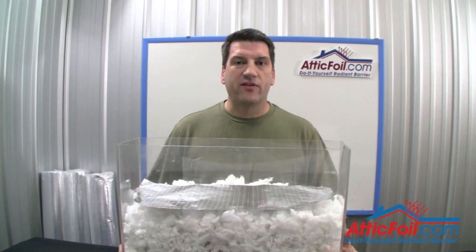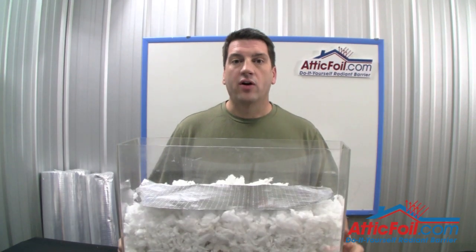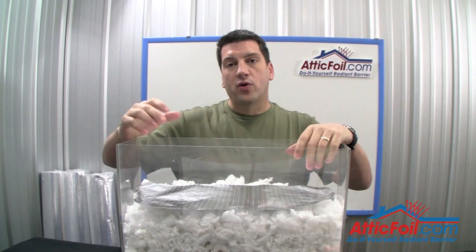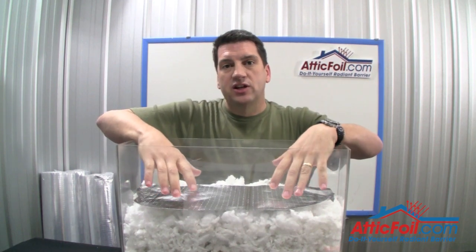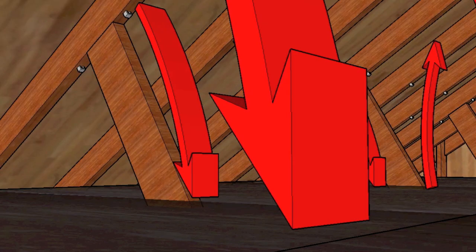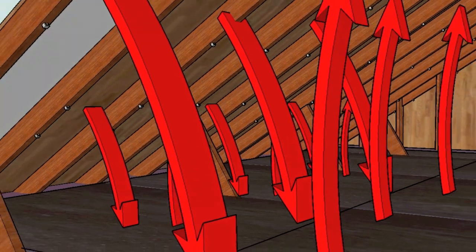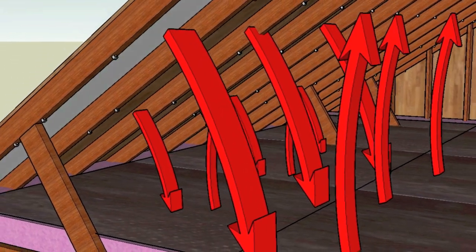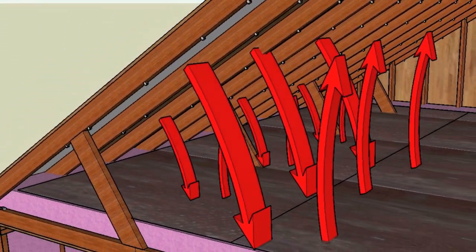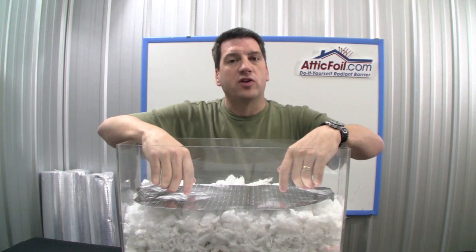Finally, don't forget about the summer benefit of installing attic foil radiant barrier. Radiant heat that would normally come off the roof and be absorbed by the attic insulation is now going to be reflected back. That means the insulation will stay cooler. That means less heat gain into your home. Less heat gain means your air conditioner will run less. It'll save you money and your home will be more comfortable in the summer.